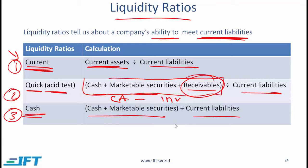If these ratios are relatively high — relative to other companies in the industry — that means the company has enough liquid assets to cover its liabilities; in other words, its liquidity position is good and short-term obligations will be met. However, if the ratio is extremely high, that might imply the company is not managing its assets very efficiently.